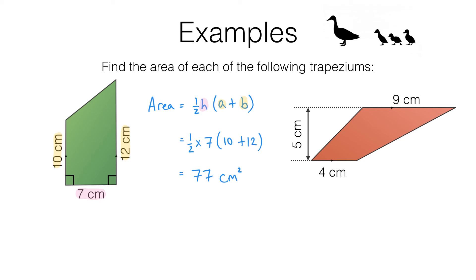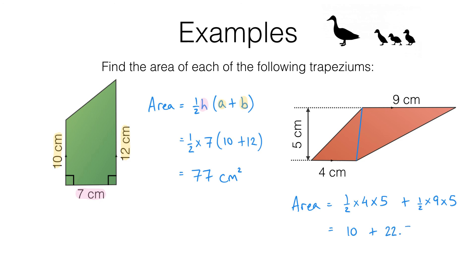Moving on to the other trapezium, I'll do this one by splitting it up into triangles. The first triangle has area of 4 × 5 ÷ 2 — a base of 4 and a height of 5, giving a half base times height. Then I add the area of the other triangle, which has a base of 9 centimetres and a height of 5 centimetres. So that's ½ × 4 × 5 = 10, plus ½ × 9 × 5 = 22.5. So the area ends up being 32.5 centimetres squared.